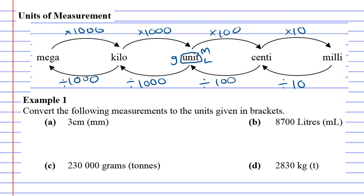Units of measurement, example one. Convert the following measurements to the units given in brackets. We're going to convert 3 centimeters into millimeters using the diagram above to help us.